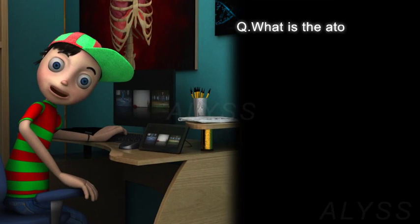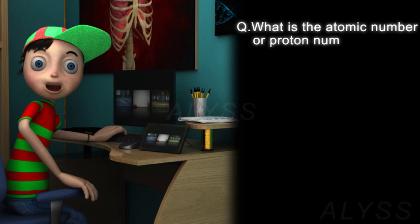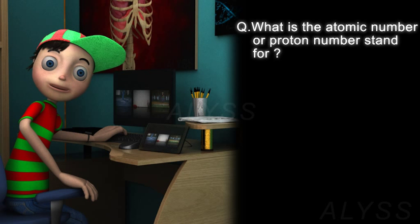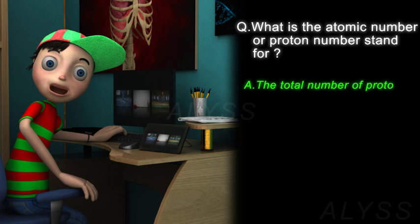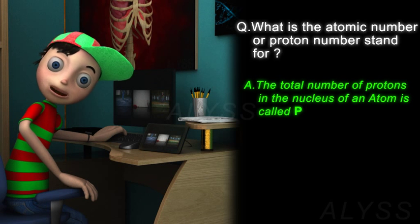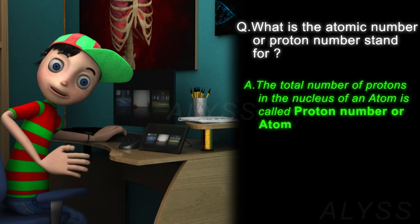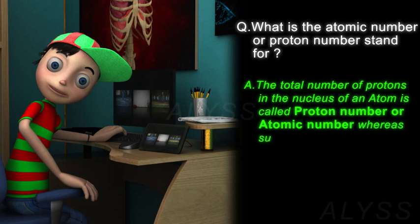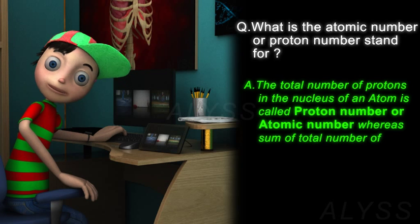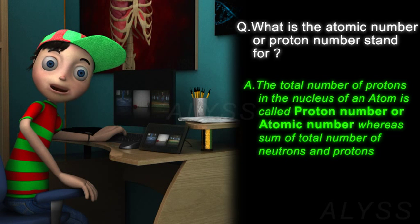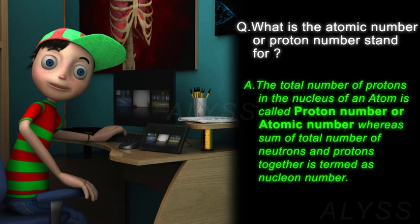So what does the atomic number, or proton number, stand for? Well, the total number of protons in the nucleus of an atom is called the proton number, or the atomic number, whereas the sum of the total number of neutrons and protons together is termed as the nucleon number.